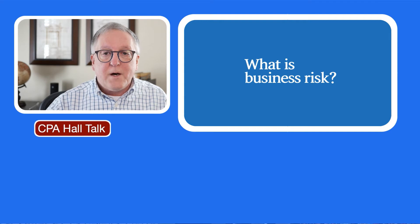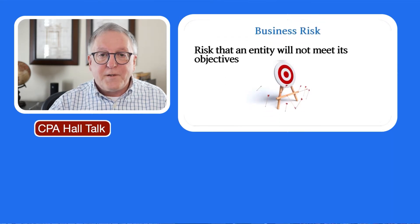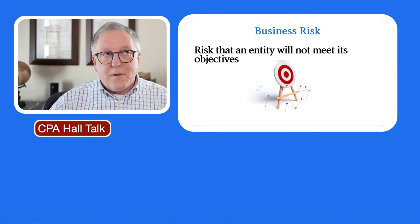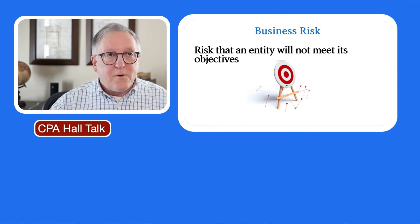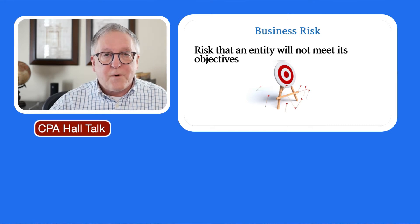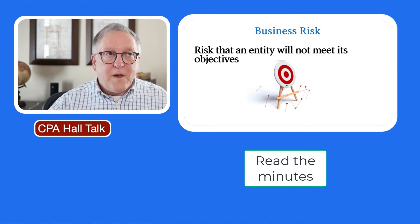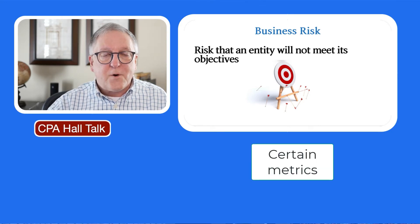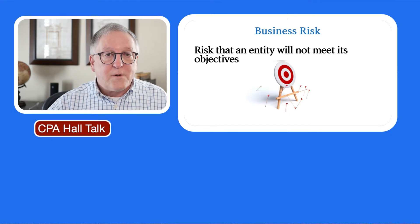The first thing to think about is business risk. Business risk is the risk that an entity will not meet its objectives. As you're having these early conversations, you're asking what are the objectives of your organization and what are the primary things you're trying to achieve. A practice I use in determining business risk is to simply read the minutes. If you've got an entity that keeps good minutes, you're often going to see what the objectives of the business are and certain metrics tracked month after month — that tells you what they're trying to achieve.